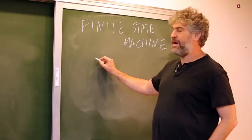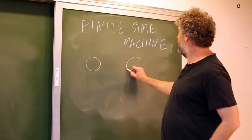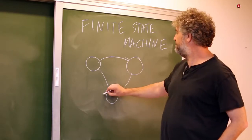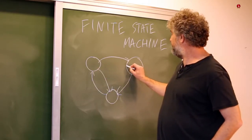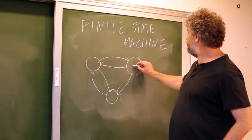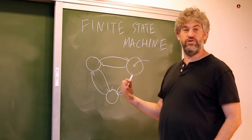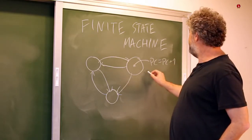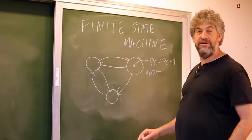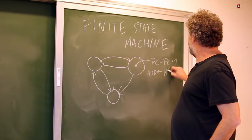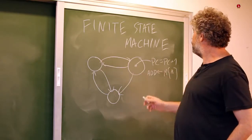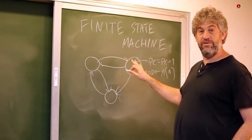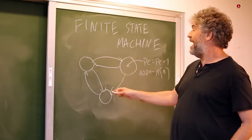The idea is that for every possible state the machine can be in, you have a circle, and you have arrows between the different circles or states of the machine, that tell you from which state you move to which other state, and why. In each state you can write what the machine needs to do in that situation — for example, add one to the program counter, or get a certain address a certain value from the memory address addressed by A. In every different state you can write this information, giving you a clear picture of what needs to be done and what state you move to next — for example, if the current clock cycle changed, or if the current memory location has value zero.